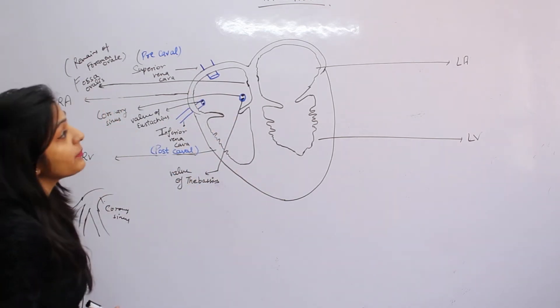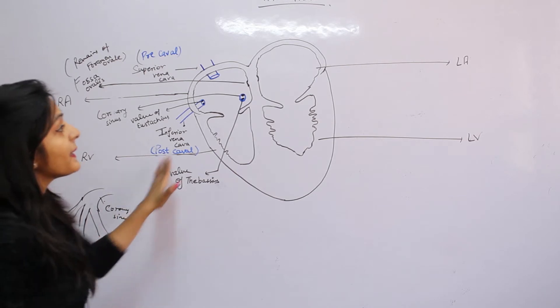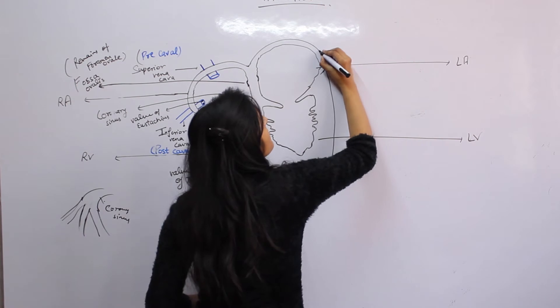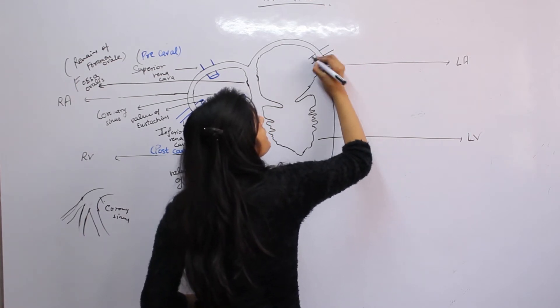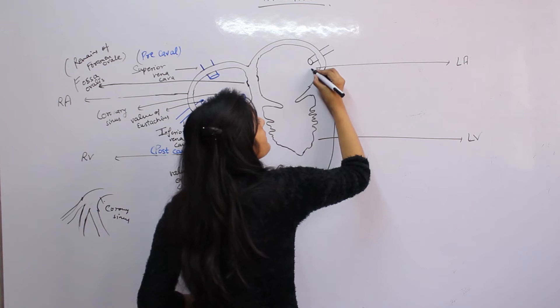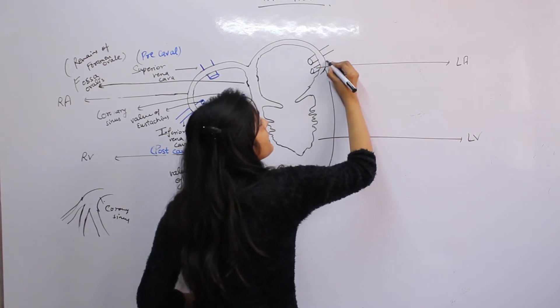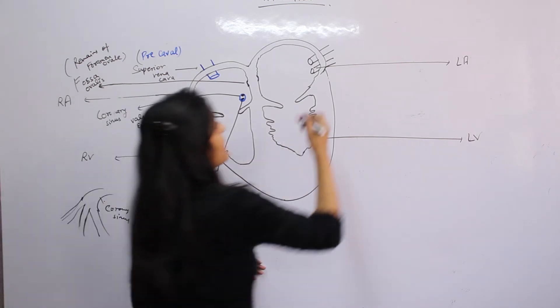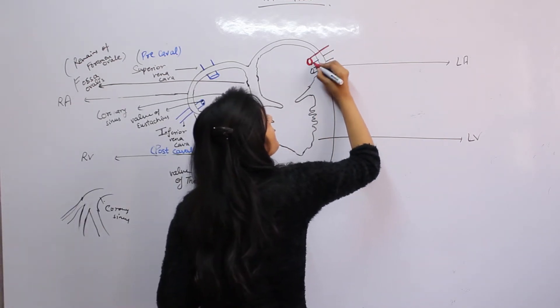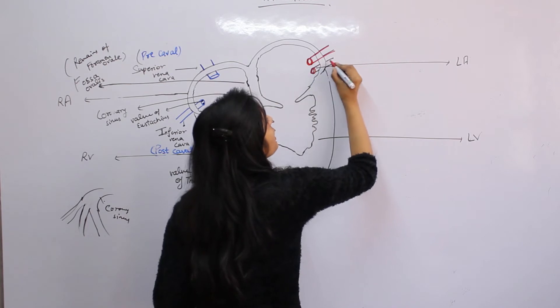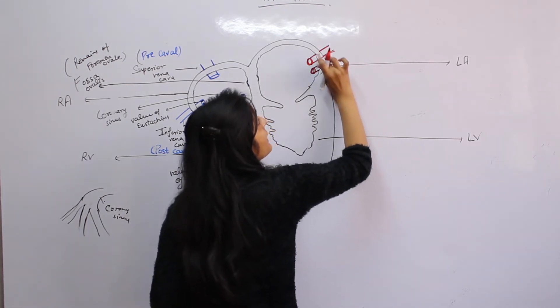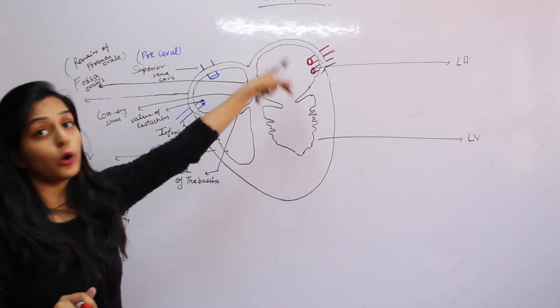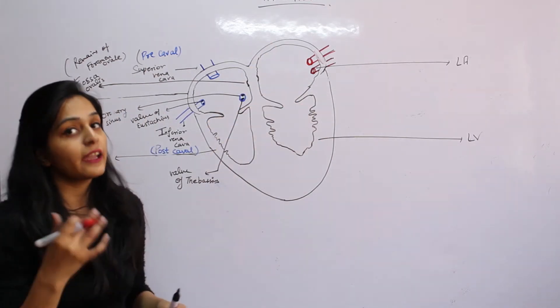Now let's go to the other chamber. Here is our left atricle. Pulmonary veins bring oxygenated blood here. There is an exception here: veins usually don't carry oxygenated blood, but pulmonary veins are an exception.